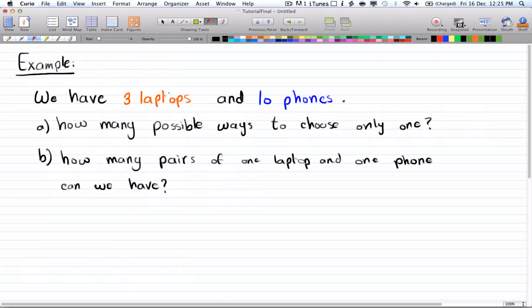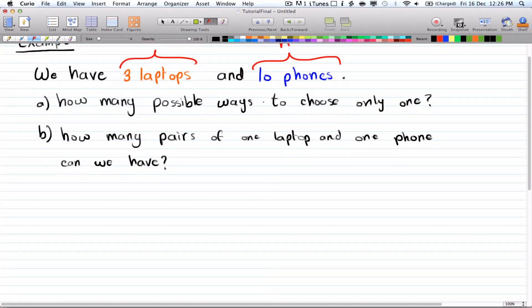And here we have three laptops and ten phones, so let's label them m and n. We want to find the possible ways to choose only one of them, and this is the same as what we did earlier. We have just one bag, the magical bag that has three laptops and ten phones, so you just put your hand in at random.